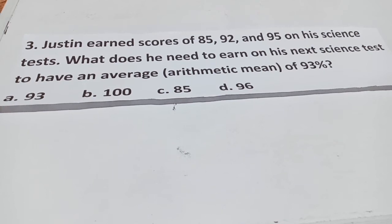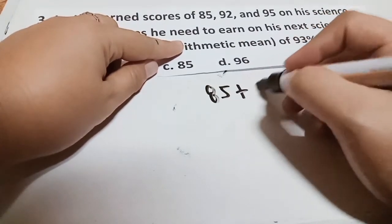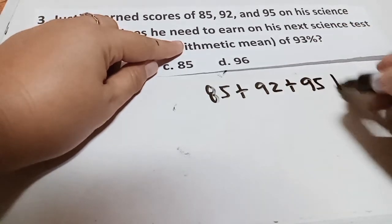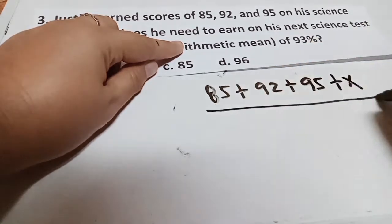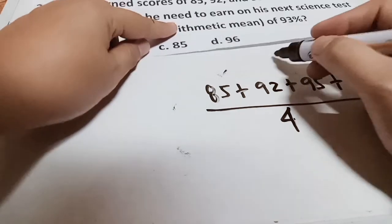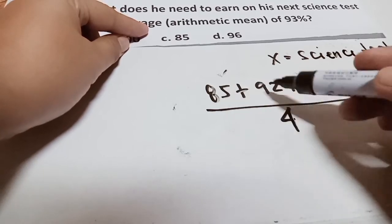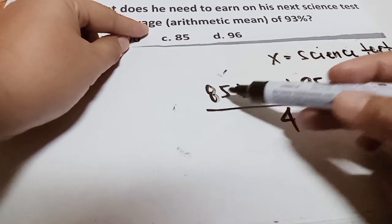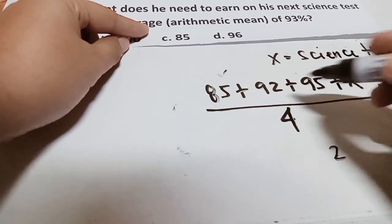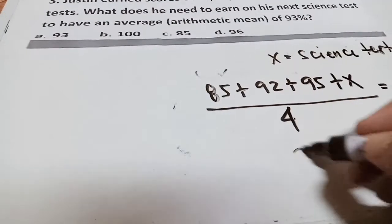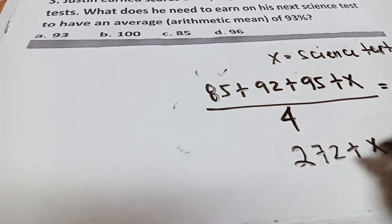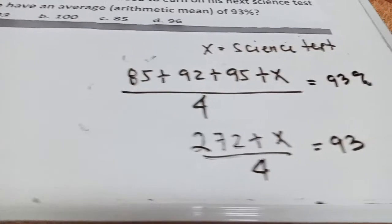Justine earned scores 85, 92, and 95 on his science test. What does he need to earn his next science test to have an average or arithmetic mean of 93%? What you will do is to add 85 plus 92 plus 95 plus x. Take note, this will be the unknown, divided by 4 equals 93%. x represents as a science test. If we will add 85, 92, and 95, 5 plus 2 will be 7, 7 plus 5 will become 12. Carry 1. 9 plus 9, this will become 27.